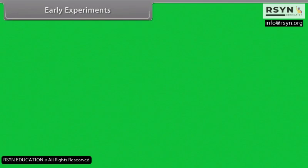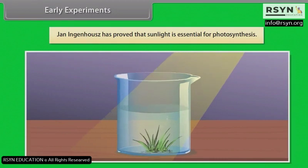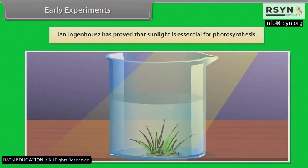Jan Ingenhaus proved that sunlight is essential for photosynthesis. He experimented on aquatic plants and observed that in the presence of sunlight, small bubbles formed around the green parts of the plant, whereas in the absence of sunlight no bubbles were formed. These bubbles were found to be oxygen.